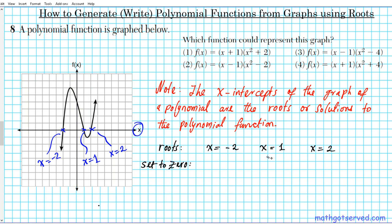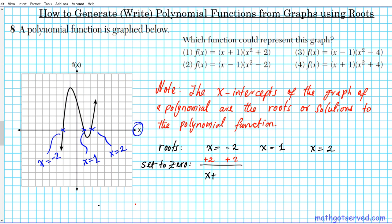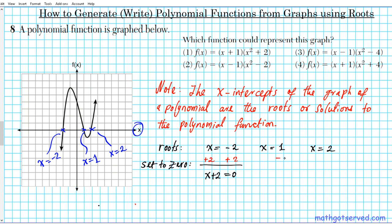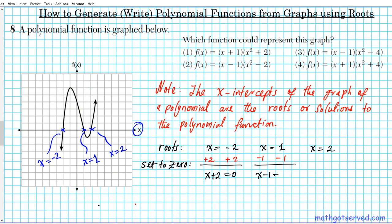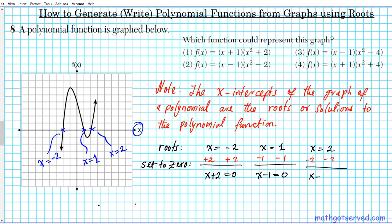Let's write that down: the roots are x = -2, x = 1, and x = 2. Next step — we set the roots to zero; we are essentially un-solving the equation. To get x + 2 = 0, you add 2 to both sides. To get x - 1 = 0, you subtract 1 from both sides. And to get x - 2 = 0, you subtract 2 from both sides. All three have now been set to zero.